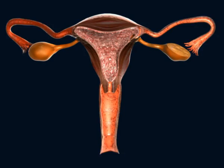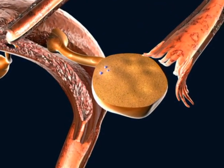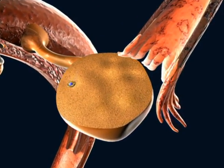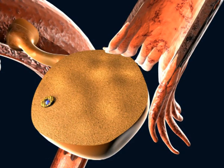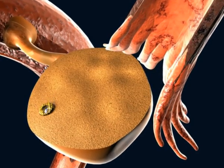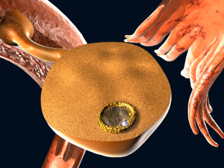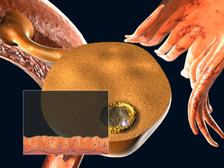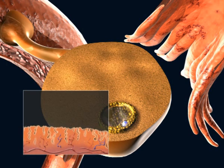At the start of the menstrual cycle, a cohort of follicles starts to grow, but generally only one continues to develop. This follicle is referred to as the dominant follicle. In its interior, the follicle contains an immature oocyte. This follicle increases in size by one to two millimeters per day. The follicle produces estrogen and causes the lining of the uterus, the endometrium, to thicken.